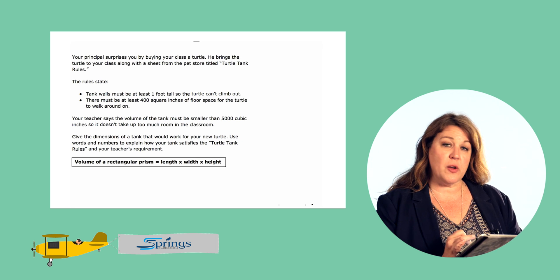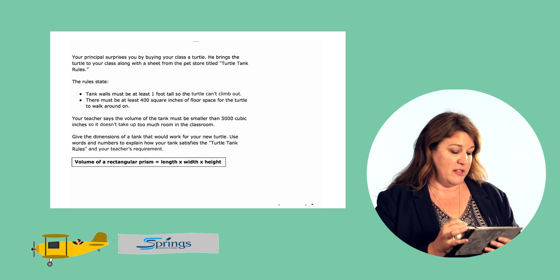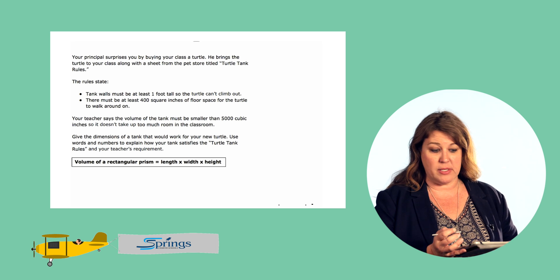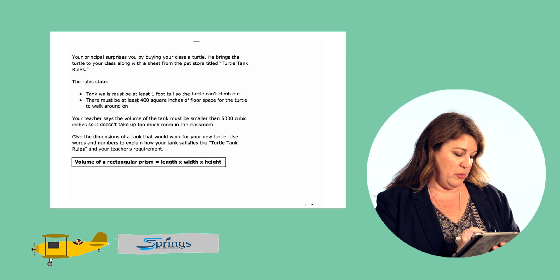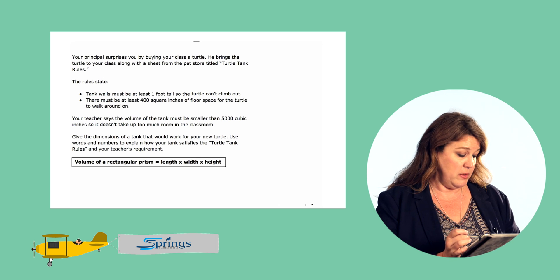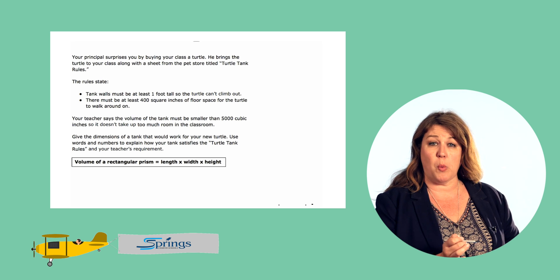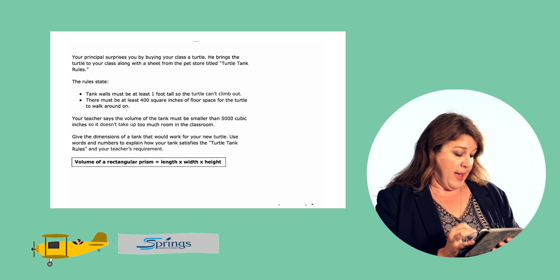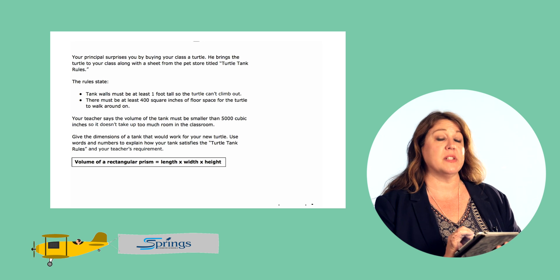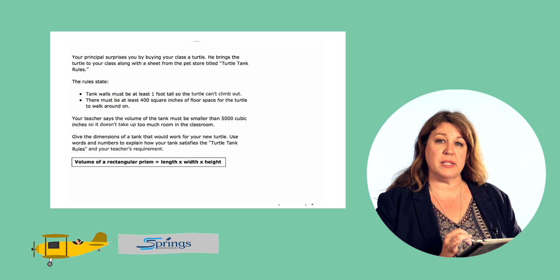We got a class pet — a turtle — so now we need a tank the turtle can call home. We have options, we just need to make sure the tank we design follows a few simple rules. The walls must be at least one foot tall so the turtle can't climb out. There must be at least 400 square inches of floor space for the turtle to walk around on. And the teacher says the volume of the tank must be smaller than 5,000 cubic inches. So we have three criteria our tank must meet.